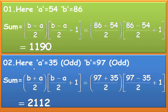In the second problem, we find the sum of all odd numbers from 34 to 98. Since odd numbers start from 35, we take a equals 35. And since 98 is even, the last odd number before it is 97, so b equals 97. The formula is the same: (b plus a) divided by 2, into (b minus a) divided by 2, plus 1. So (97 plus 35) divided by 2, into (97 minus 35) divided by 2, plus 1. Taking this product we get 2112.